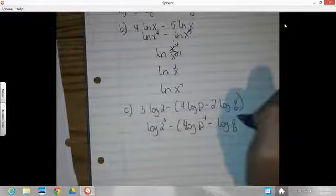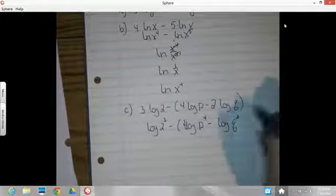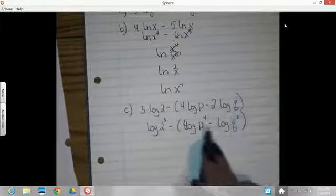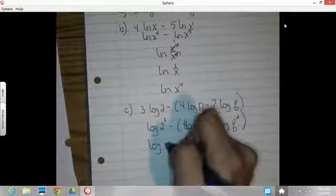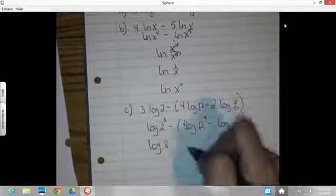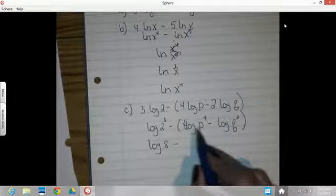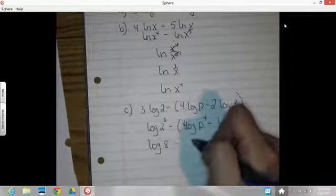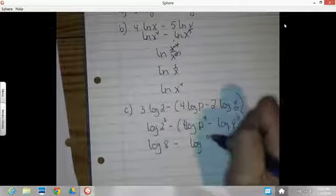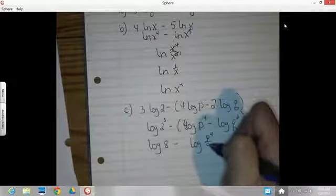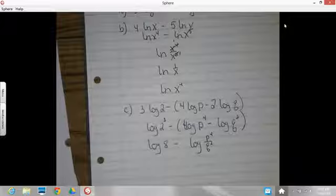of q squared. So bringing the multipliers up as the exponents. Now I'll work inside parentheses. Next, I'll just go 8 minus here, because I've got the two logs subtracted, I can write them as a single log of a quotient. So that will become the log of p to the 4th over q squared. Parentheses are gone.